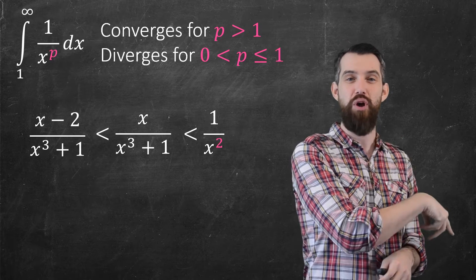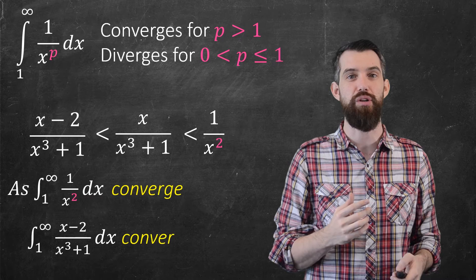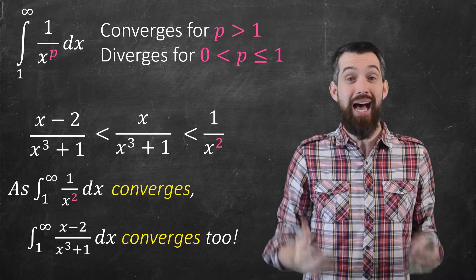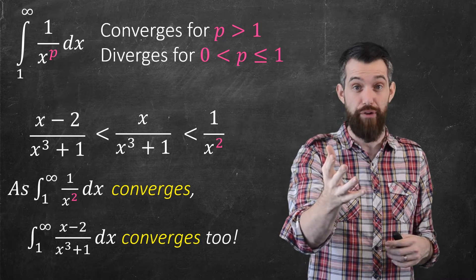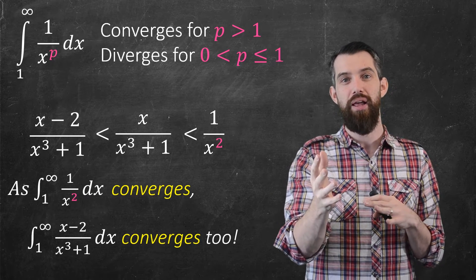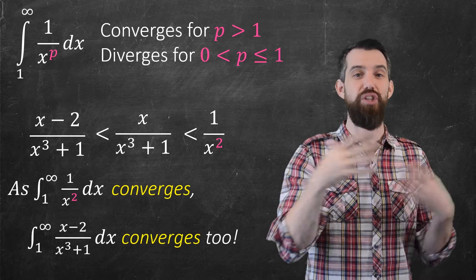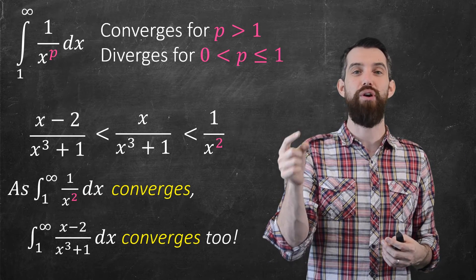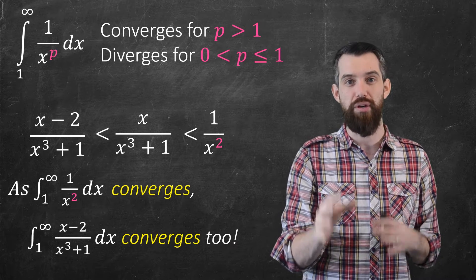This is exactly what we saw in the previous video, and we know that this integral converges. So we can finally conclude that because the integral from 1 to infinity of 1 over x squared converges — that's a p-integral — it follows that the integral from 1 to infinity of (x minus 2) over (x cubed plus 1) must also converge.